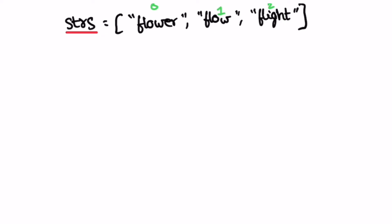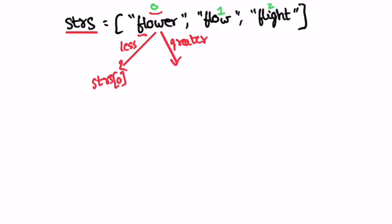We are going to build the final answer from our first word, irrespective of whatever word that may be. The length of the first string might be greater than or less than the remaining words, but our answer will come from the first word. There are two cases: if the first word's length is less than the others and the whole word is a common prefix, we return the whole first word. Otherwise, if the first word is longer, we build the output by taking a substring from index zero until index i.